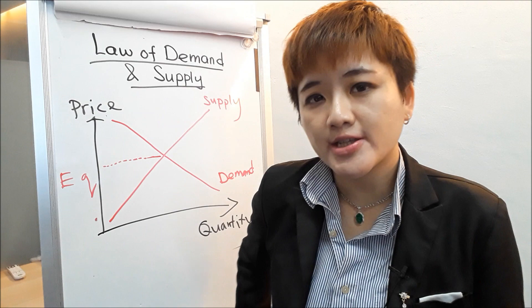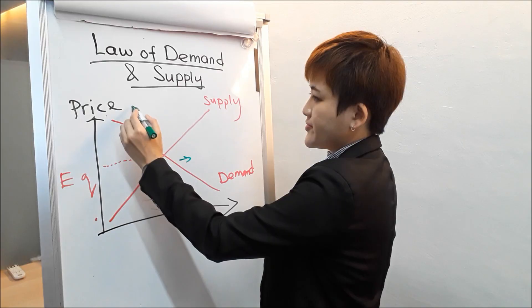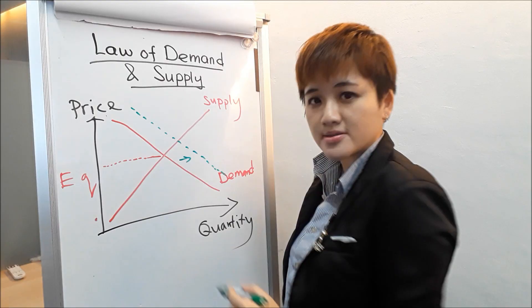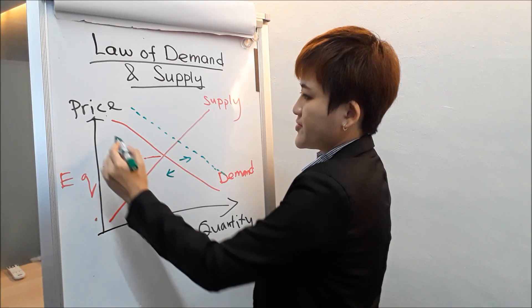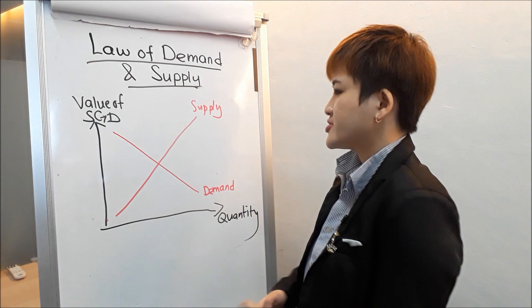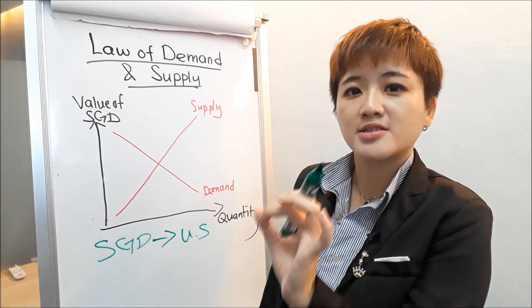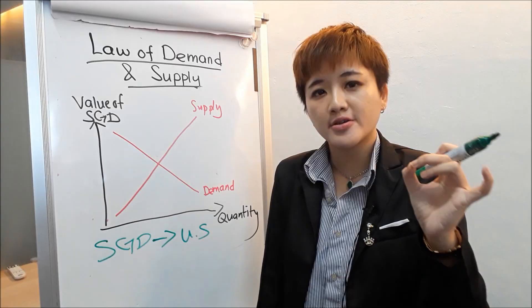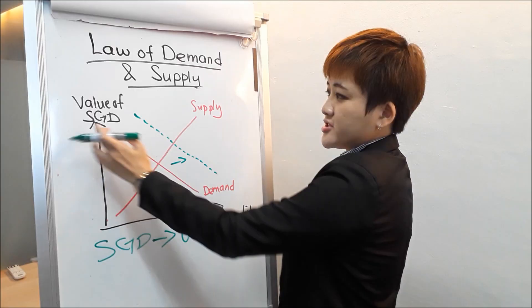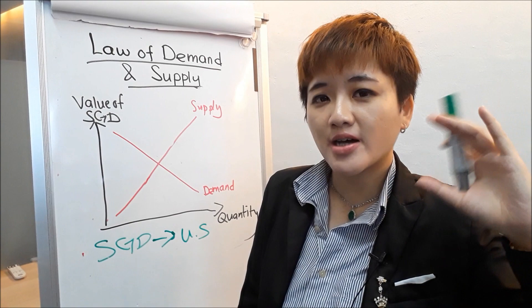The equilibrium level is where supply and demand meet, assuming everything else remains the same. But what if one external factor changes? For example, if people's income increases, demand is going to increase and the curve shifts to the right. If people's income decreases during a recession, the curve shifts to the left. Applying this to currencies: if Singapore exports more to the United States, U.S. importers are going to exchange USD to SGD, increasing demand for Singapore dollars — the curve shifts right, SGD appreciates. At the same time, supply of U.S. dollars increases, so the U.S. dollar depreciates.